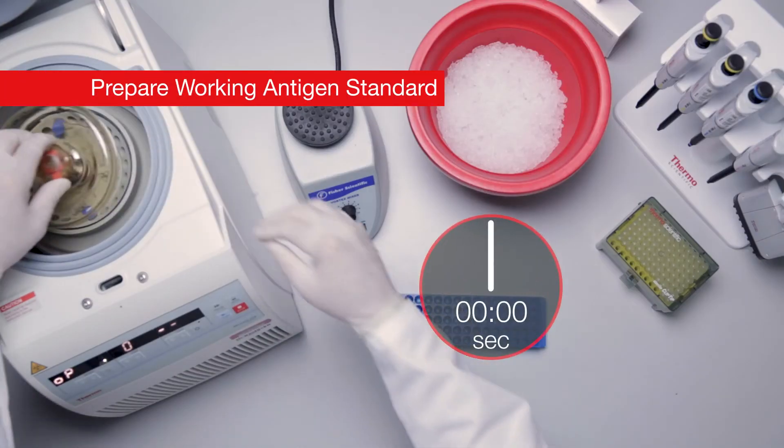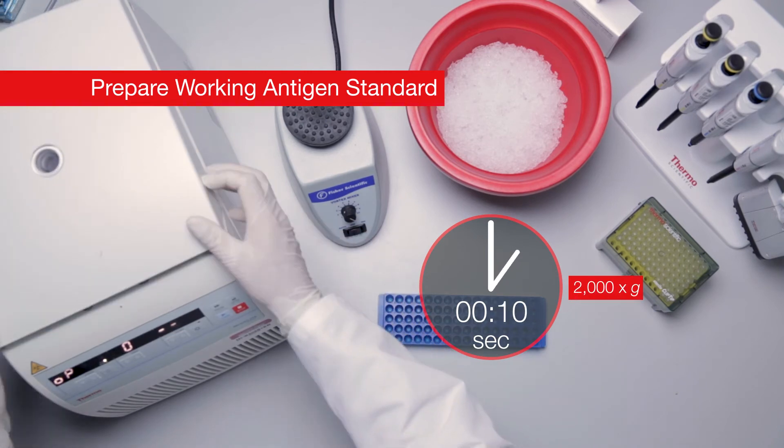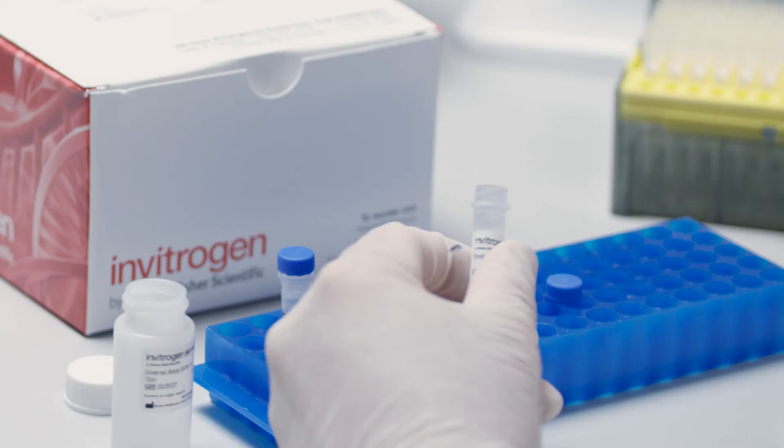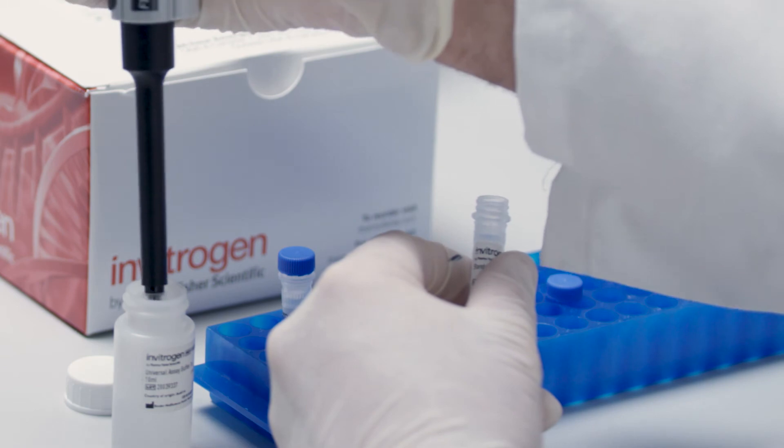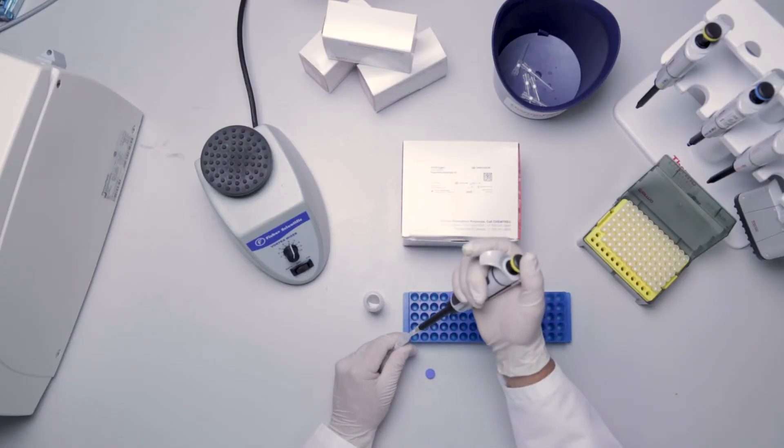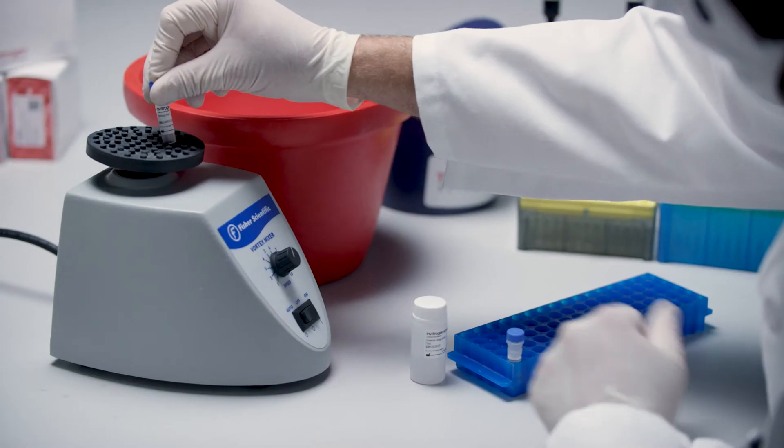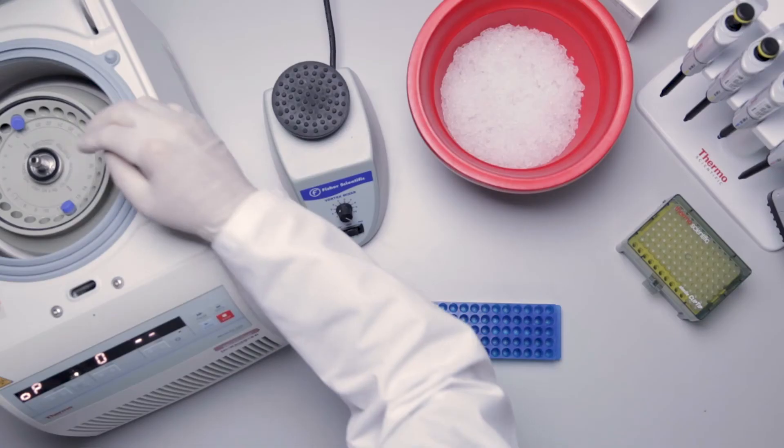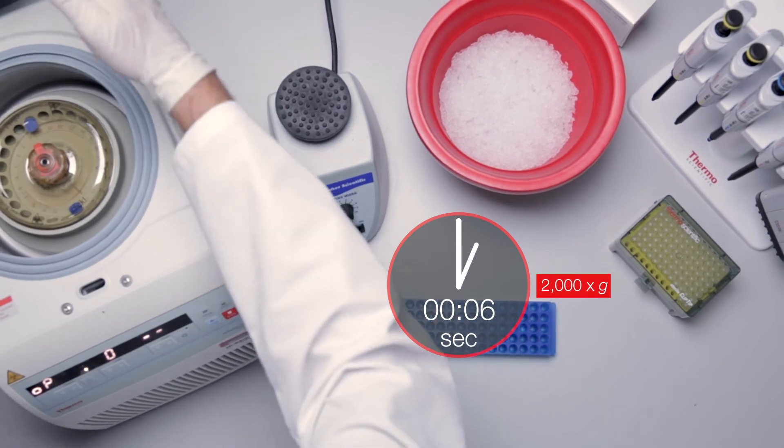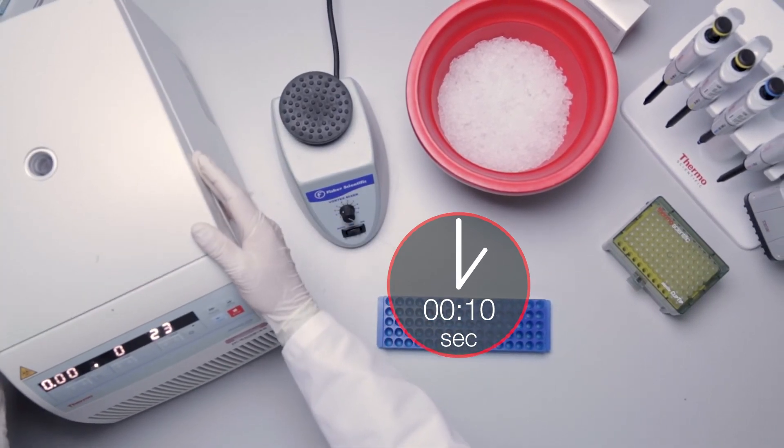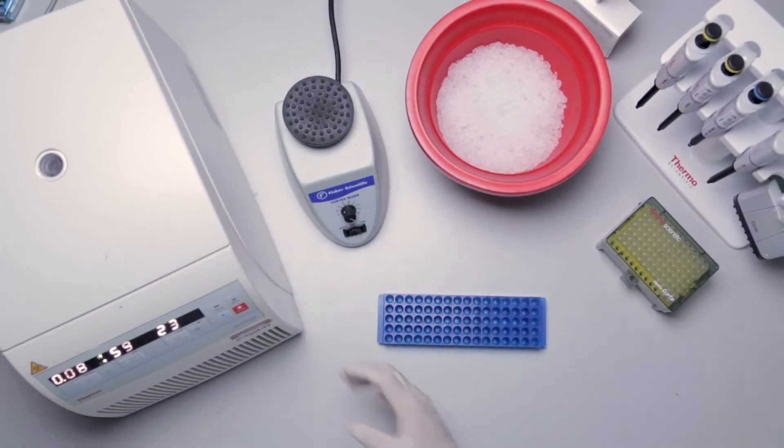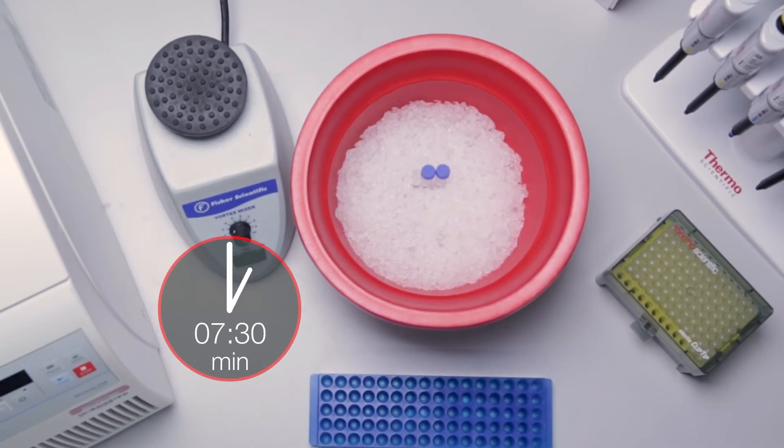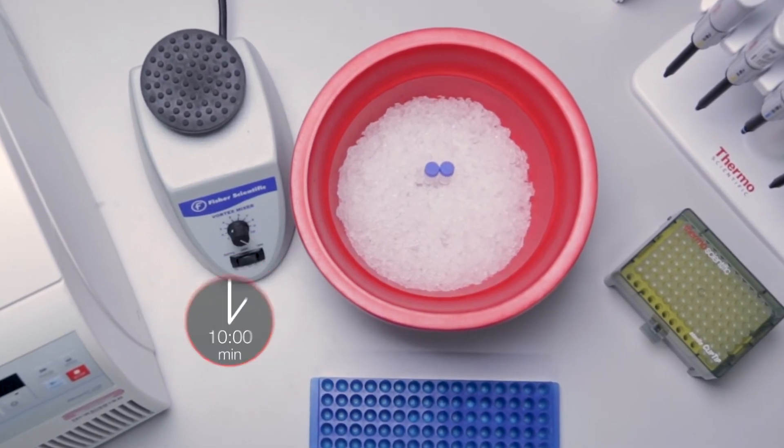Centrifuge each different standard vial at 2000 g for 10 seconds. Add 50 microliters of universal assay buffer or cell culture medium to each vial. Vortex each antigen standard vial at high speed for 30 seconds. Centrifuge at 2000 g for 10 seconds to collect the contents at the bottom of the vials. Incubate on ice for 10 minutes to ensure complete reconstitution.